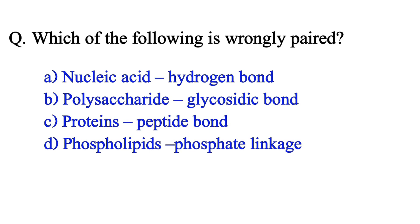Which of the following is wrongly paired? Option A: nucleic acid — hydrogen bond. Option B: polysaccharide — glycosidic bond. Option C: proteins — peptide bond. Option D: phospholipid — phosphate linkage. The correct answer is Option A: nucleic acid — hydrogen bond.